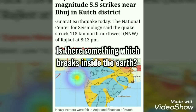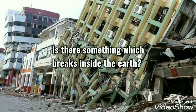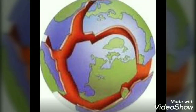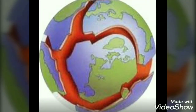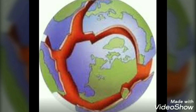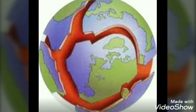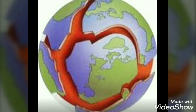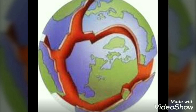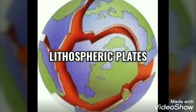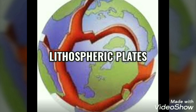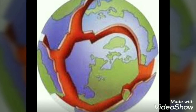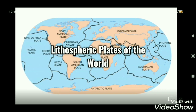Is there something which breaks inside the earth? Yes, there certainly is. It is the crustal rock which breaks. You would be surprised to know that the upper part of the earth on which we live is broken into several pieces, and these pieces are known as lithospheric plates. These plates are continuously moving, but the rate of movement is very low — just a few millimetres each year.